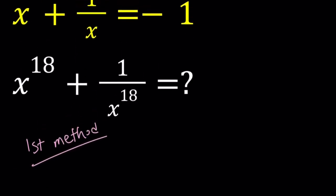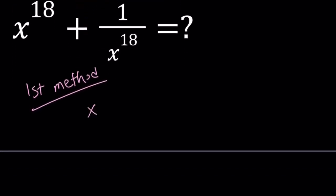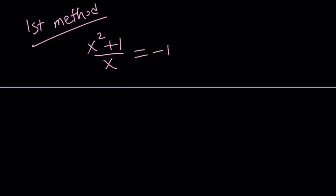So for my first method, I want to make a common denominator and then multiply both sides by x. And I'll put everything on the same side. Now, if you solve this quadratic equation using the quadratic formula or otherwise, you're going to get complex roots, non-real complex roots.